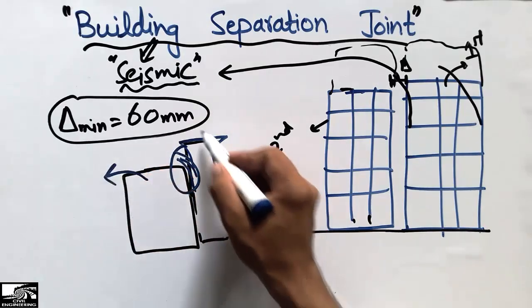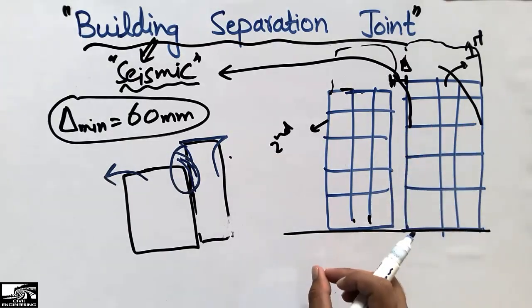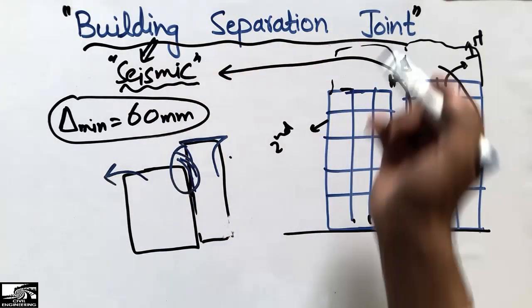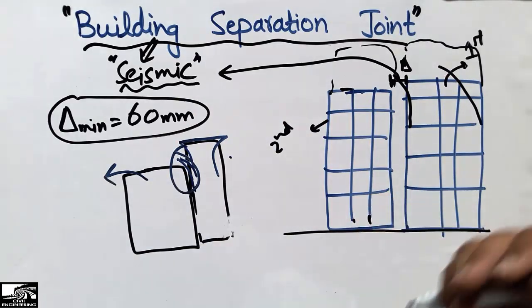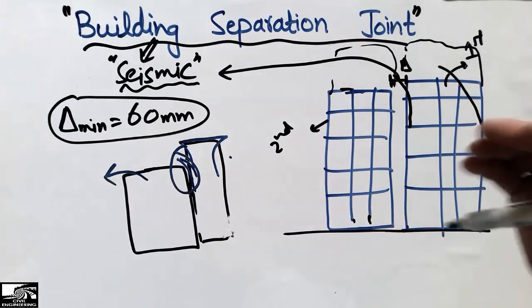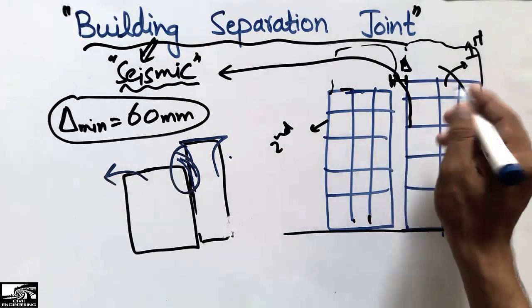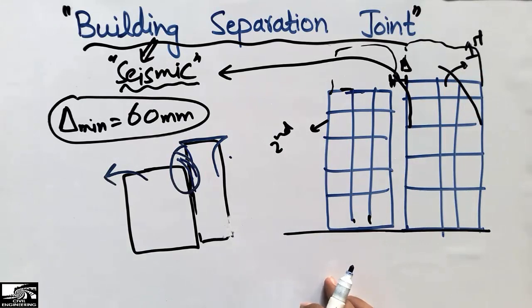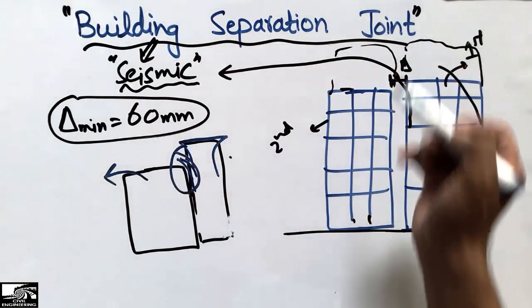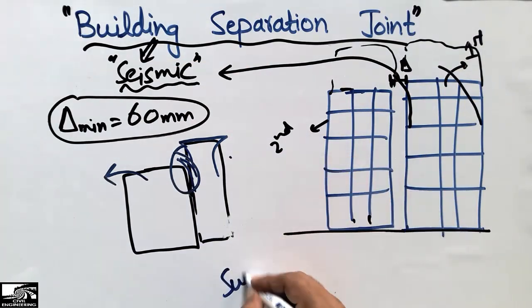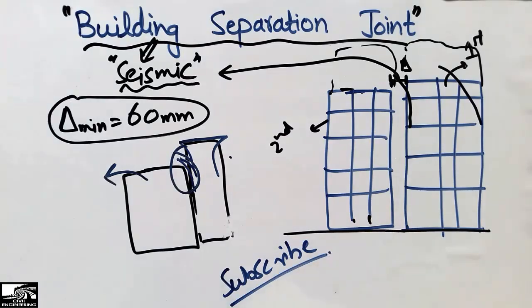That's why we provide some distance between the two buildings, known as the building separation joint or the seismic separation joint, so that damage from the earthquake is minimized. This was a simple topic about the building separation joint. Hope you understand — don't forget to subscribe to the channel for daily civil engineering videos. Thank you for watching.